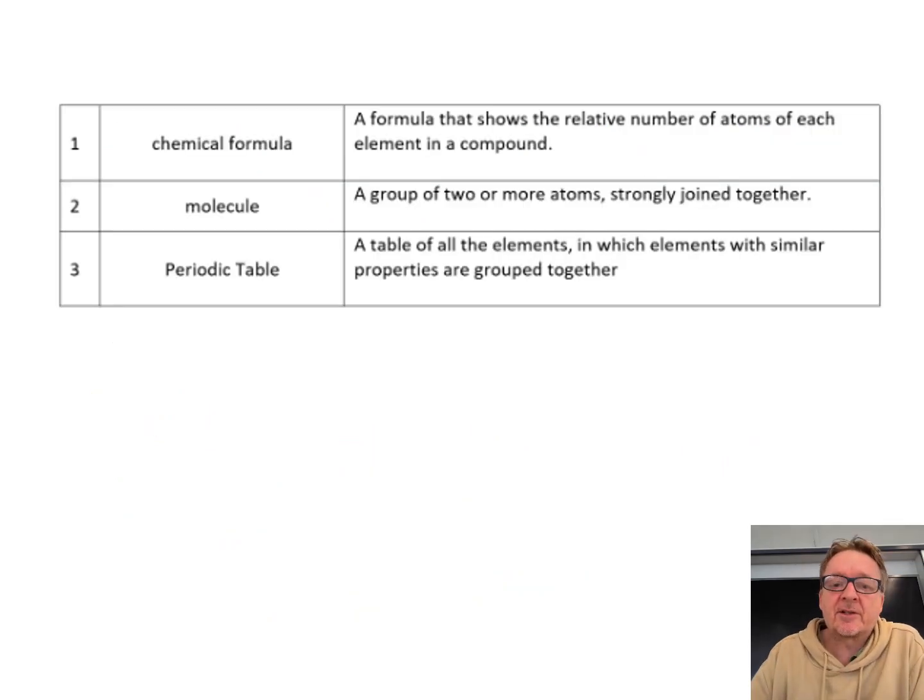Three key words: a formula that shows the relative number of atoms of each element in a compound is the chemical formula. A group of two or more atoms strongly joined together, chemically combined, is a molecule. The periodic table is the table of all the elements. Now you must understand the basics of chemistry: subatomic particles of protons, electrons, neutrons, and calculating relative formula mass. It is absolutely key to everything in chemistry.